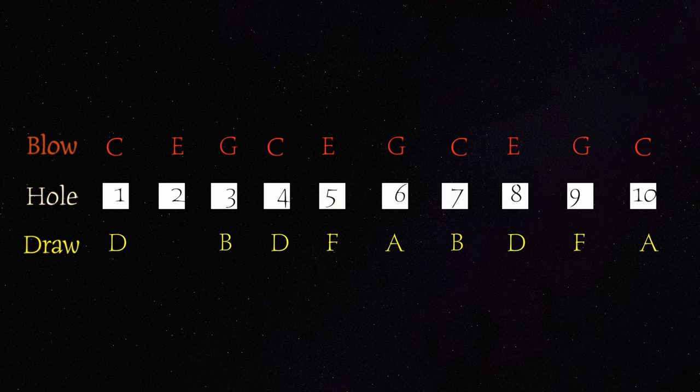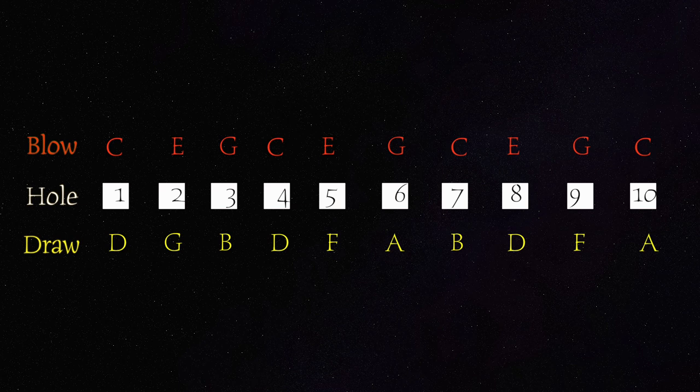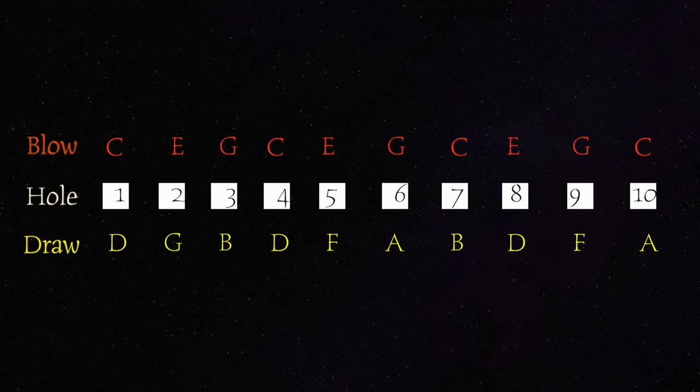The 2 draw is special. It plays a G. It's the same as a 3 blow. I'm gonna wonder why there are 2 holes with the same note. If one can just take the place of the other. But we'll see later that the way the harmonica was tuned enables us to reach other notes that are not seen in this layout.